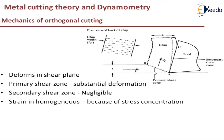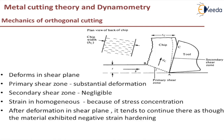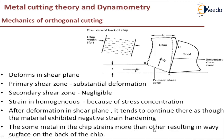That is because of stress concentration. Because of stress concentration, the stress required to deform the material is not uniform. Where the material is weak and stress concentration is high, the material will deform at a lower value of stress. Where the material is strong and stress concentration is less, it will deform at higher stress values. Once deformation begins in the shear plane, it tends to continue there as though the material exhibited negative strain hardening.